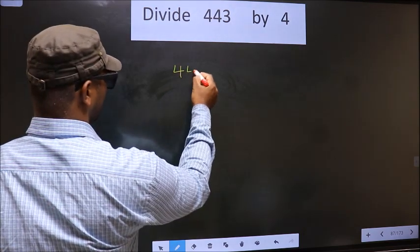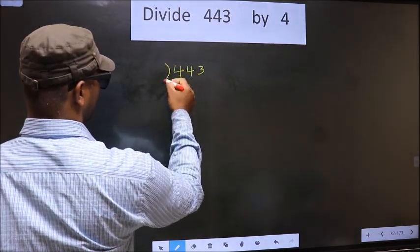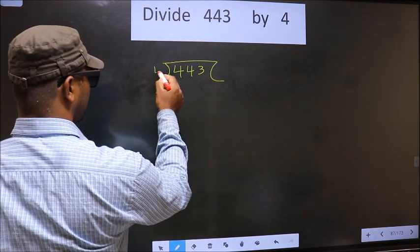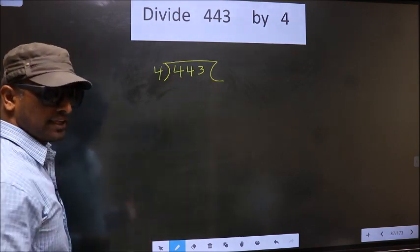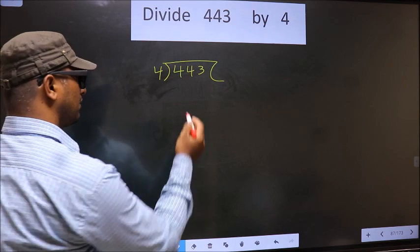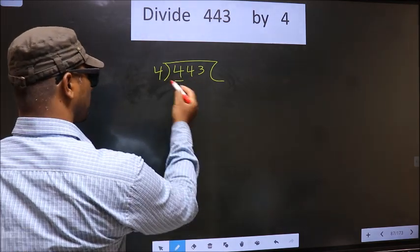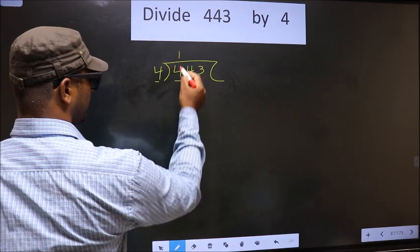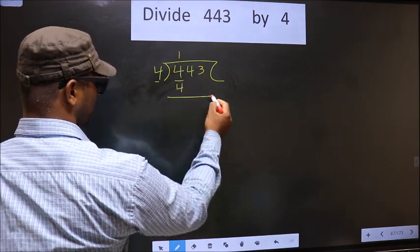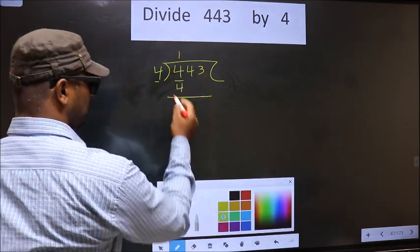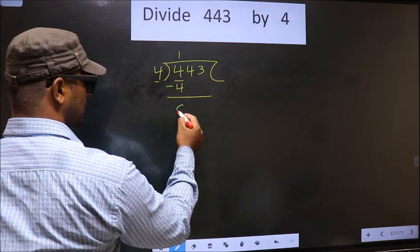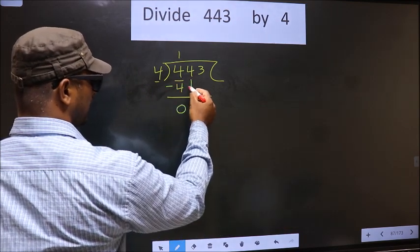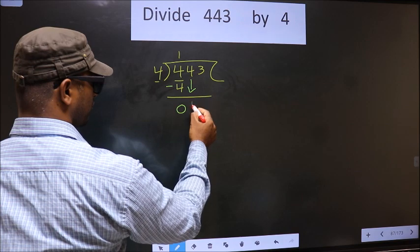That is 443, 4 here. Okay. Next. Now here we have 4, and here also 4. When do we get 4 in the 4 table? 4 once is 4. Now you subtract: 4 minus 4 is 0. Now you bring down the next number. So 4 down.